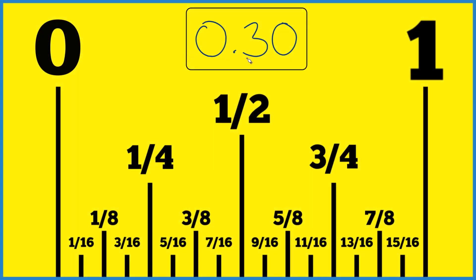So if you're given 0.3 or 0.30 inches and you want to know where that's on a ruler, here's how you do it.